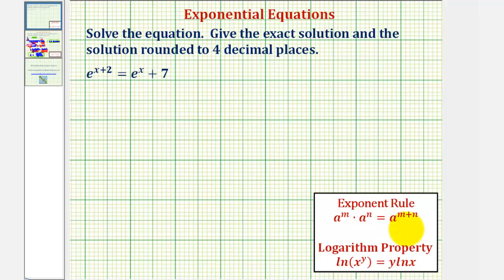If we apply this property in the reverse order, because our exponent is a sum, we could rewrite this as e to the x times e to the second. So we have e to the x times e squared equals e to the x plus seven.